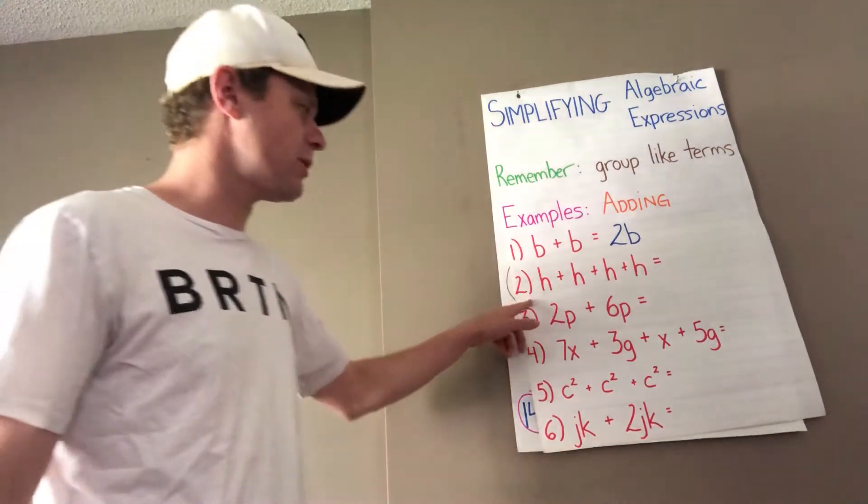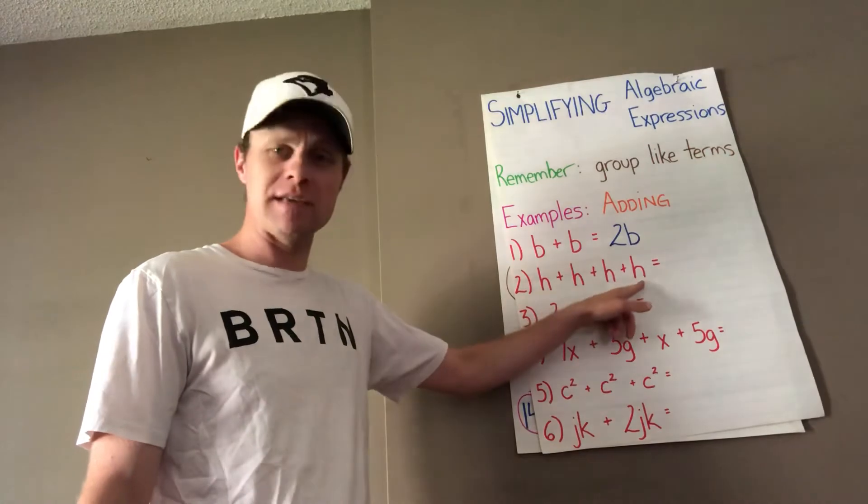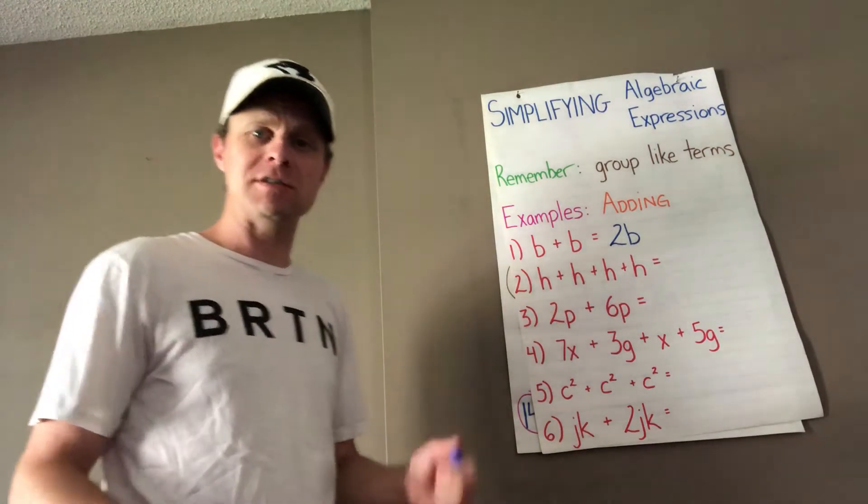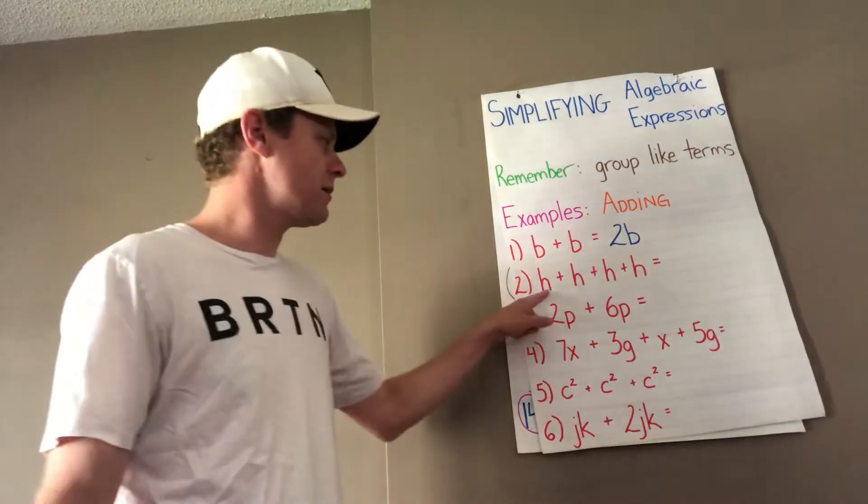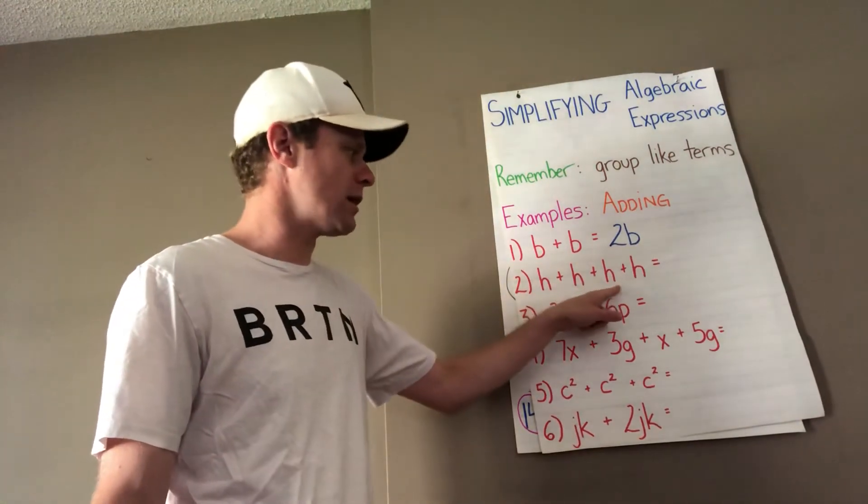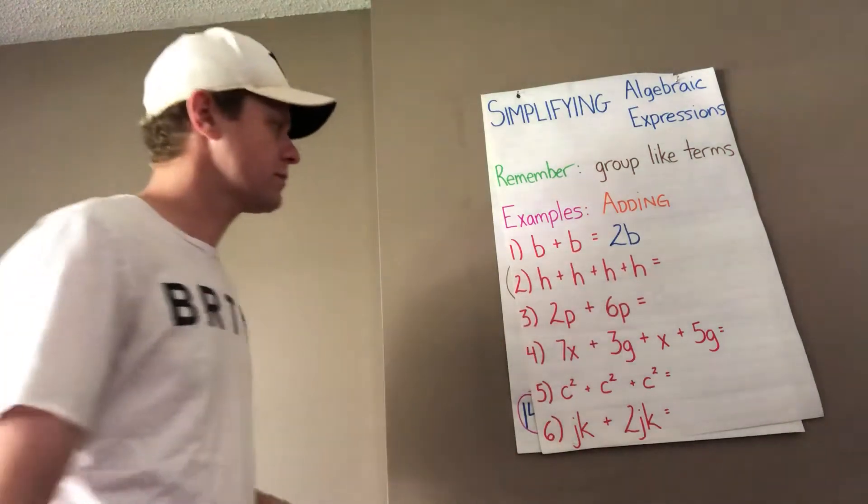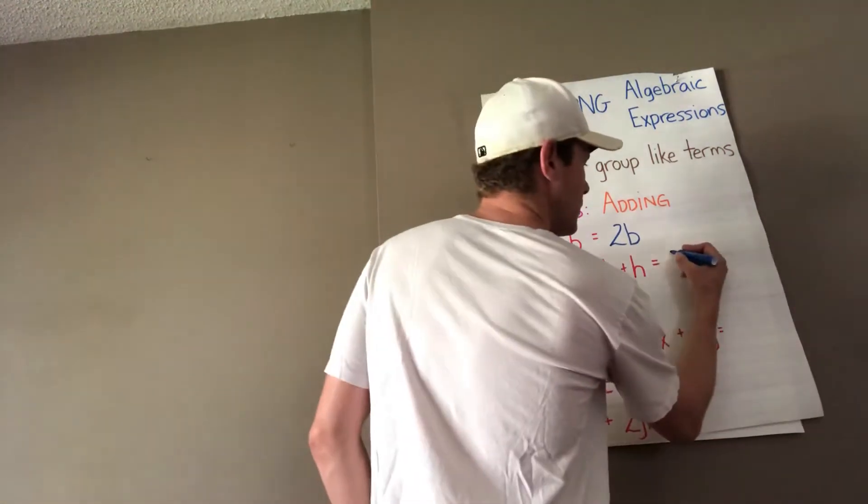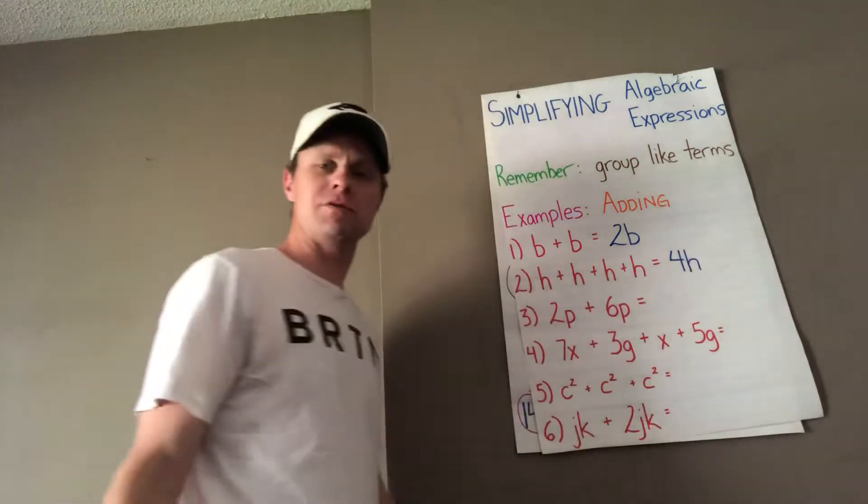Now try number 2 on your own. h plus h plus h plus h. How many h's are there? How many h's are we adding together? 1 plus 1 plus 1 plus 1. 4h. Brilliant.